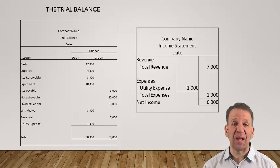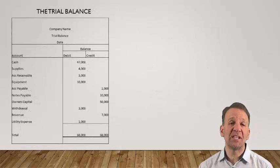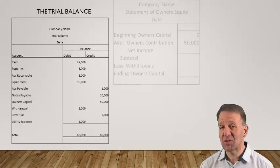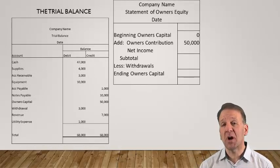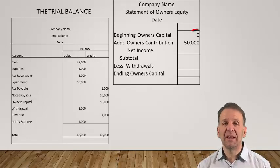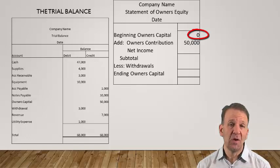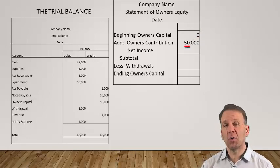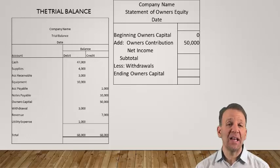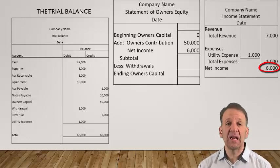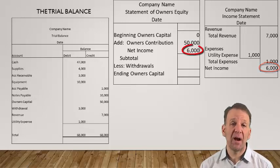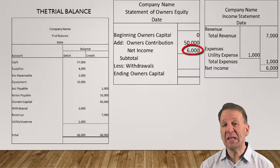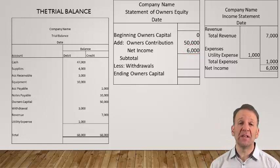Now let's look at the next financial statement that we will prepare. You can see that we still need our trial balance. This next financial statement is the statement of owner's equity and we start with the beginning owner's capital. In our example, this is a brand new business so the beginning owner's capital balance is zero. From here, we will add any new owner contributions — the owner contributed $50,000. Next, we add our net income or net loss. The net income comes from our income statement. That is why we prepared the income statement first, because we need the net income amount in order to prepare this financial statement.